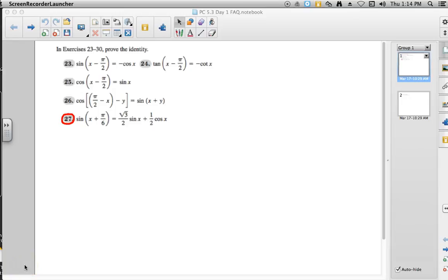These are the frequently asked questions for pre-calculus, and this is for section 5-3, day 1. In exercises 23 to 30, it says prove the identity.